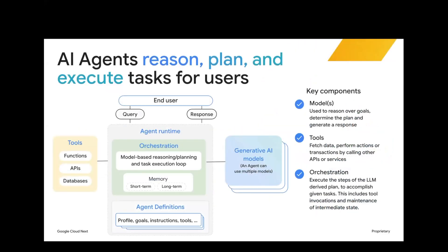This brings us to our definition of what an agent is. We believe there are three key components. The first one is the model - that's the enabler of a lot of the things we talk about today. The model needs to be able to reason, determine a good plan, and generate responses.